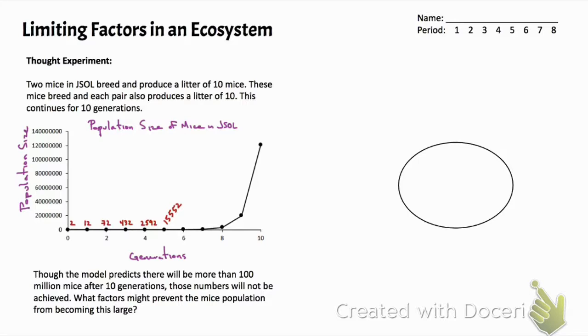Over the next few generations you can quickly see that the growth is going to explode, so that by the 10th generation there are over 120 million, almost 121 million mice.